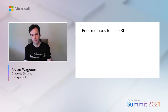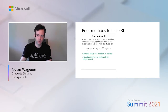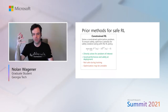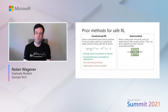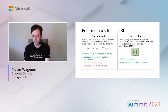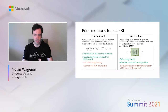Prior methods for safe RL fall into one of two camps. In constrained reinforcement learning, we solve a constrained optimization problem where we also optimize a penalty to ensure safety. This approach can achieve good performance and safety at deployment, but the agent will not be safe during training, and in practice this optimization can be unstable due to the associated minimax problem. In the other camp, shielding approaches wrap the RL policy with a given safety layer — any unsafe action is filtered out, and we solve a new unconstrained RL problem. By design this is safe during training, but there is a mismatch between the original MDP and the new one induced by the safety layer, so there may be no guarantees on safety or performance once the safety layer is removed.